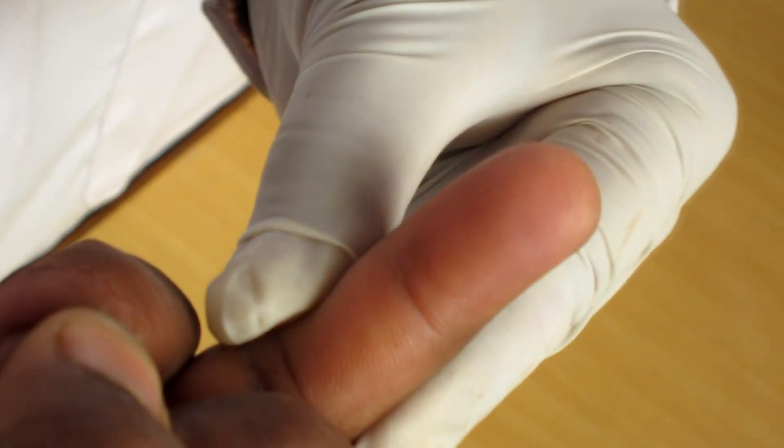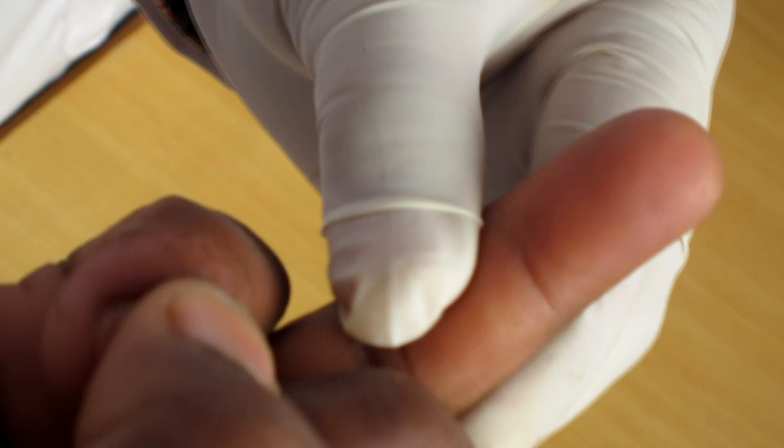The tip of a finger is cleaned thoroughly with spray and allowed to dry. Make a puncture deep enough to ensure free flow of blood without squeezing.